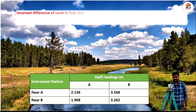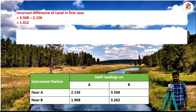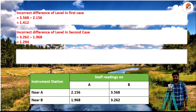We now find the true level difference. The incorrect difference of level from the first instrument position at A is: 3.568 minus 2.156 equals 1.412. The difference of level from the second instrument position at B is 1.294. The correct true difference of level between the two points is: (1.412 plus 1.294) divided by 2 equals 1.353 meters. This means point B is 1.353 meters lower than point A.